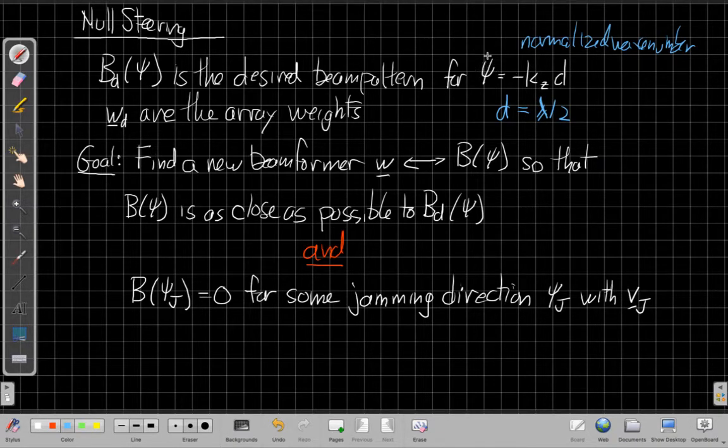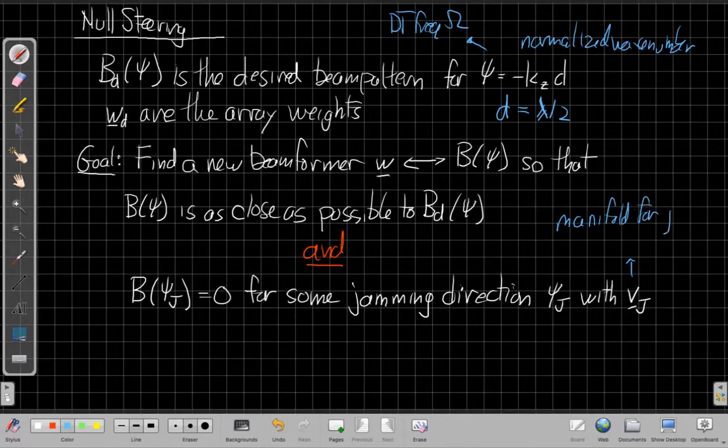When I do this, thinking about our analogy, remember psi is like discrete time radian frequency. So this is like a capital omega in discrete time. It's the spatial analog of that. I've got this beam pattern with some set of array weights W sub D. My goal is to find a new beam former W with its own beam pattern so that B of psi is as close as possible to B sub D of psi, so I'm as close as possible to that original desired thing with one tweak. I have this constraint that B of psi sub J equals 0 for some jamming direction psi sub J, which has this manifold vector we'll call V sub J. This is the manifold vector for the jammer, J for jammer.